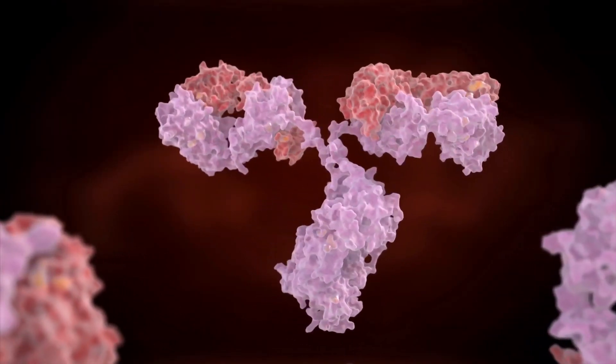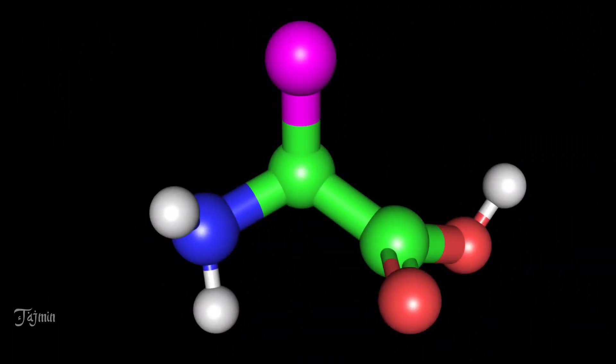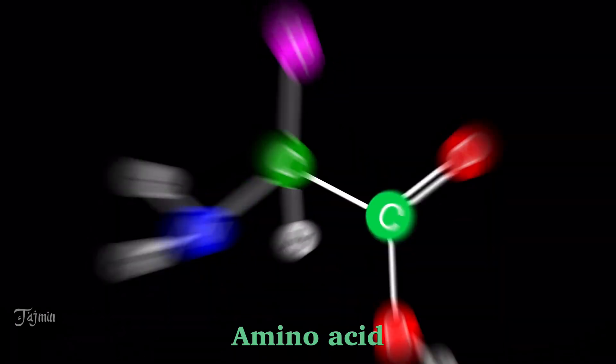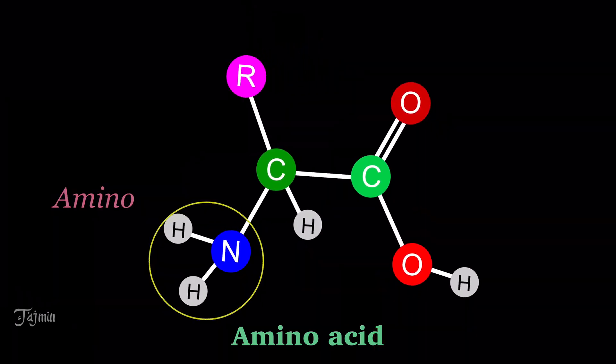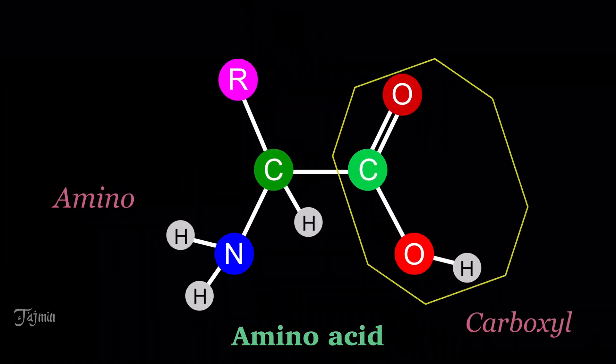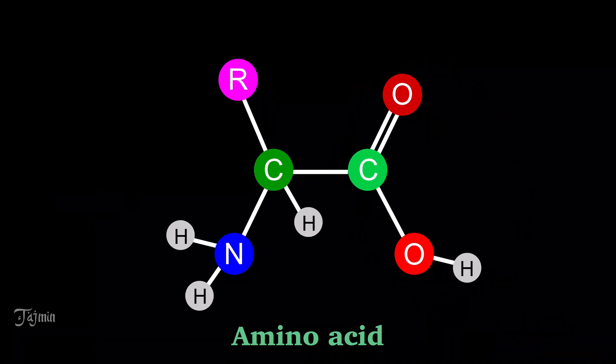Proteins are made up of amino acids. Each amino acid has two functional groups, an amino group and a carboxyl group, which are attached to a central carbon atom named as C-alpha.